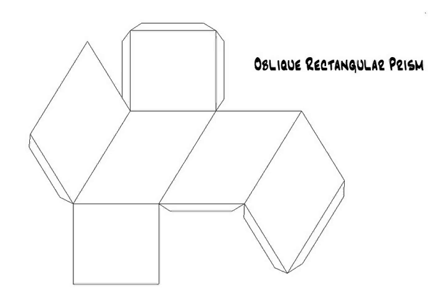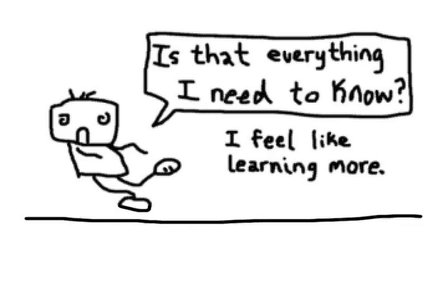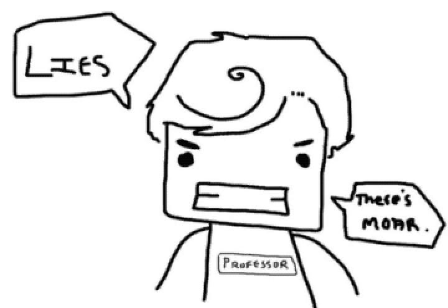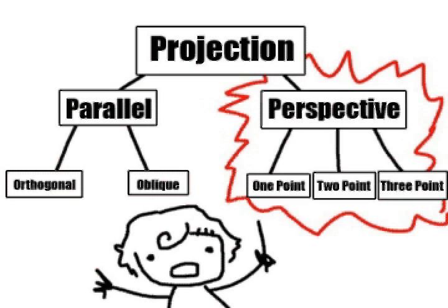However, it is the easiest. This is because oblique is not really a 3D system but a forced 2D view of the object. Is that everything I need to know? Yeah, no, there's more. There's perspective.